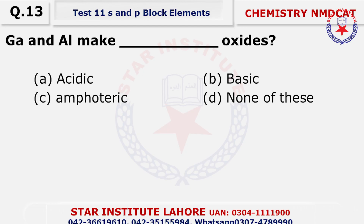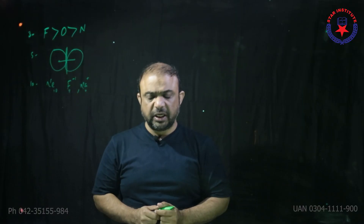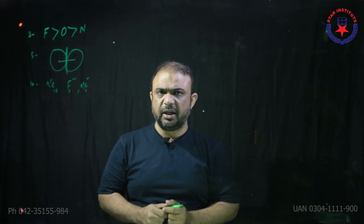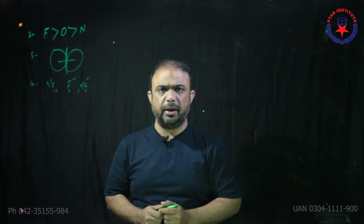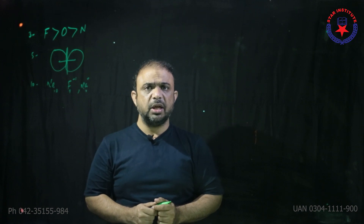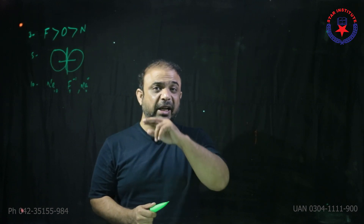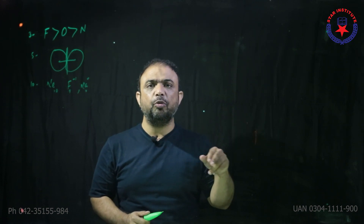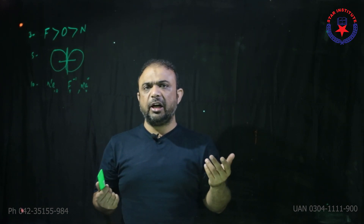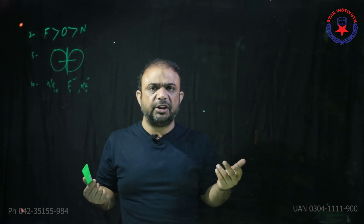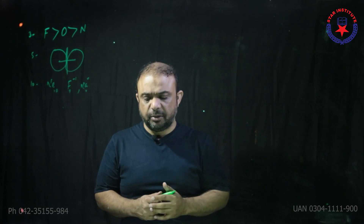Question number 13: Gallium and indium form amphoteric oxides — C is the answer. Because these elements are on the metallic ladder, and the elements found on the metallic ladder form amphoteric oxides.